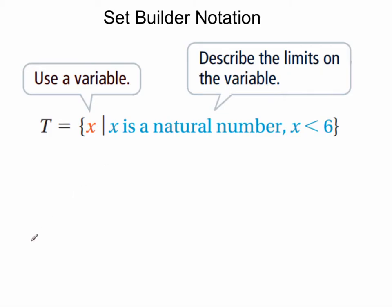When you're using set builder notation, we're going to use these brackets to denote the set. In this case, we're going to be defining our x variables. This line right here is read such that, and this last part right here is the description. So this set is defined to be, t is defined to be, the set of x such that x is a natural number and x is greater than 6.